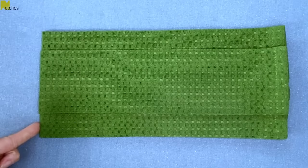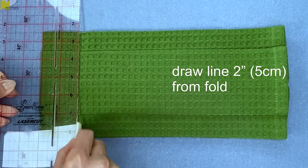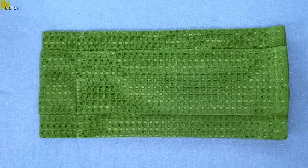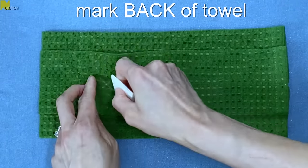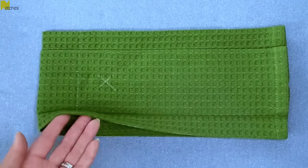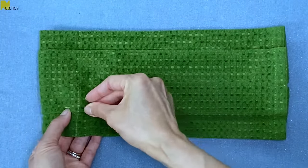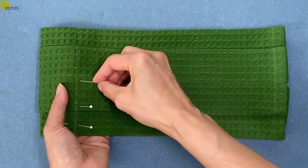From this fold, measure in two inches and draw a line across. Then if you need to, make a mark so that you know this will be the back of the towel. Now slip your hand in between and just pin through this half of the towel to keep all the folds in place.